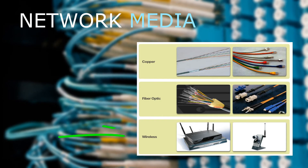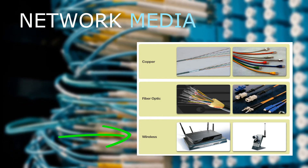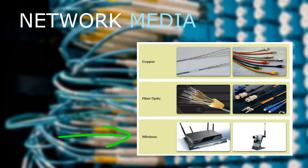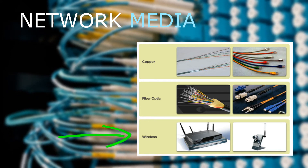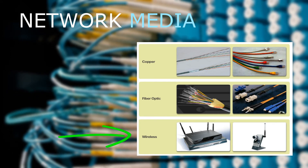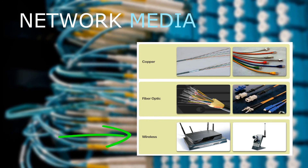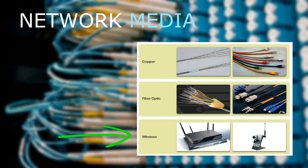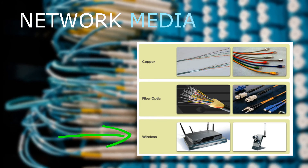The third is wireless media. Wireless media carry electromagnetic signals that represent the binary digits of data communications using radio or microwave frequencies. As a networking medium, wireless is not restricted to conductors or pathways, as are copper and fiber media.